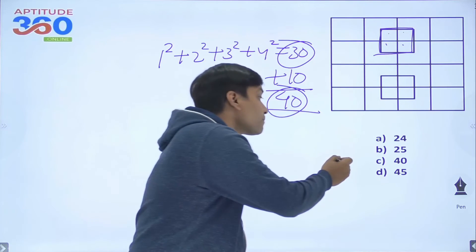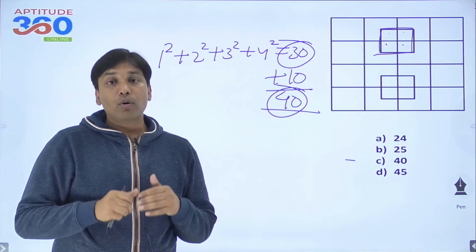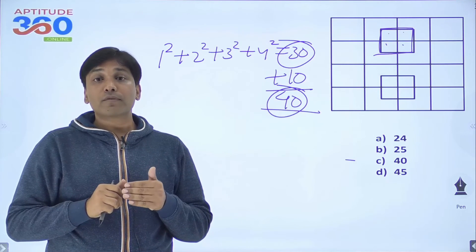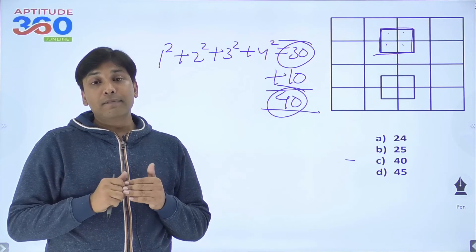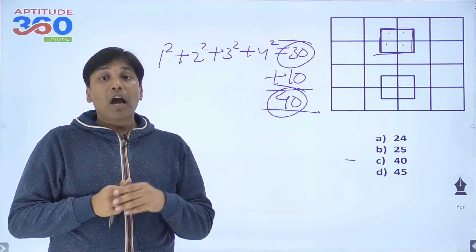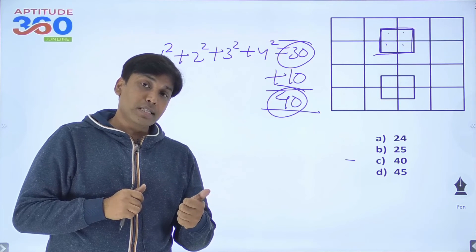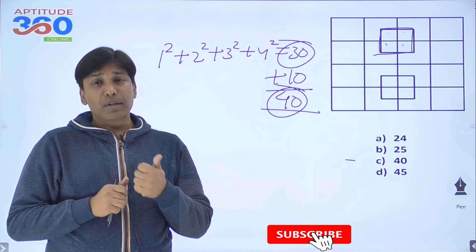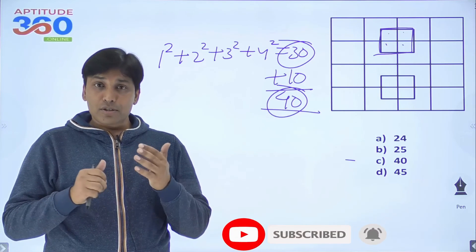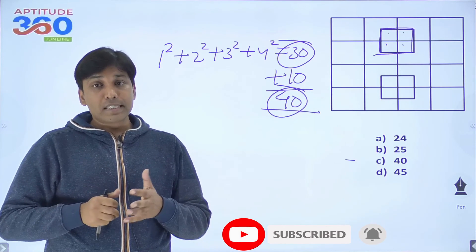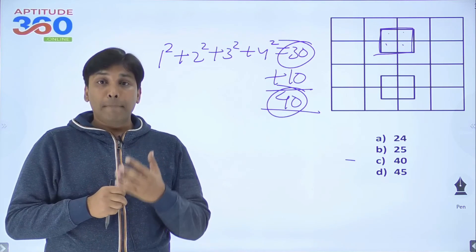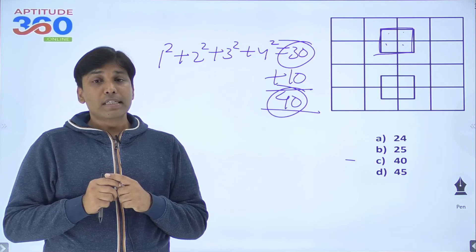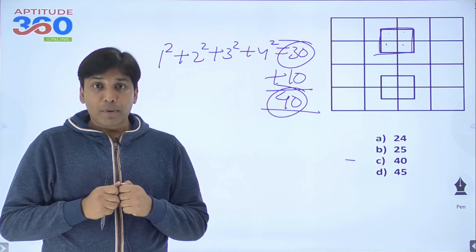I hope you are understanding this. The key lesson from this video is that you can apply the summation of n² formula only when rows and columns are both the same. What if rows and columns are not the same? For that, you will have to watch the next video in the series. Please subscribe to the channel, press the bell icon, and share this video with your friends if you feel you are learning something meaningful. See you in the next video, where we will talk about squares when rows and columns are not the same. Bye-bye and take care.